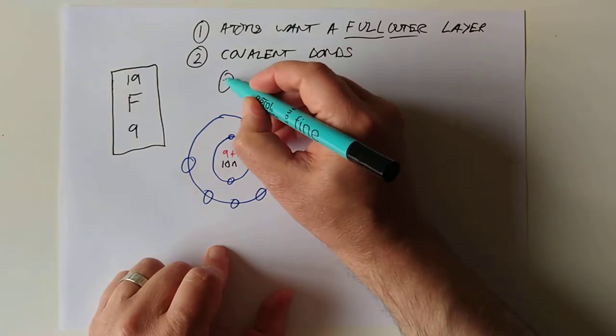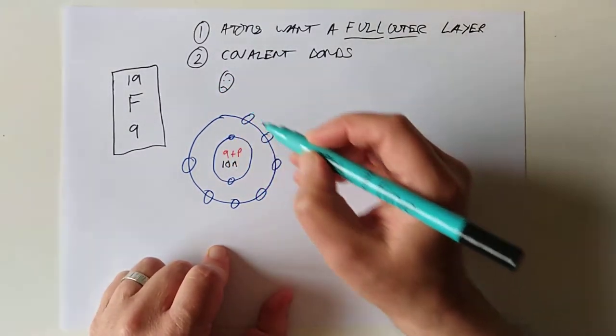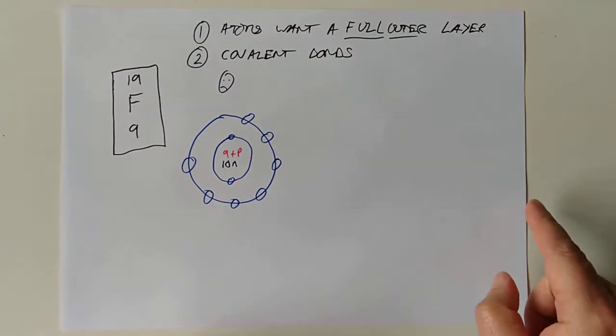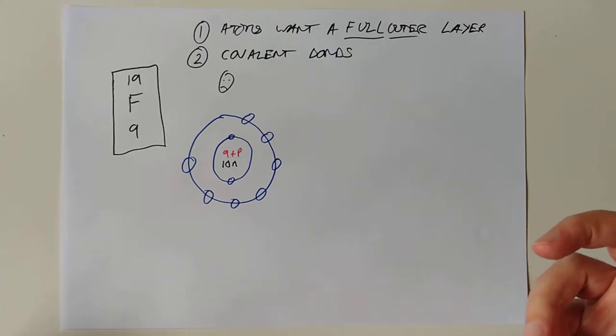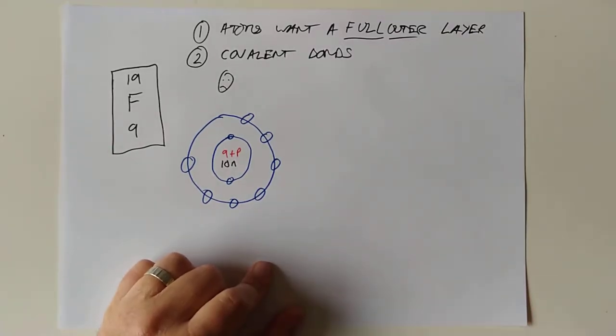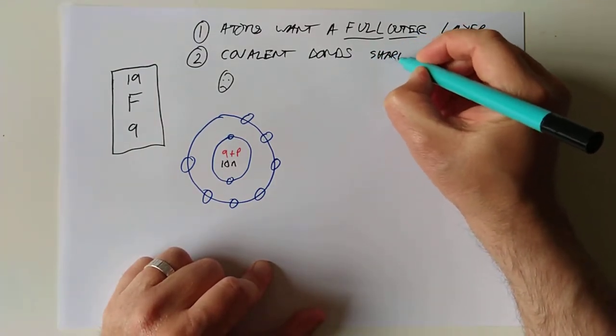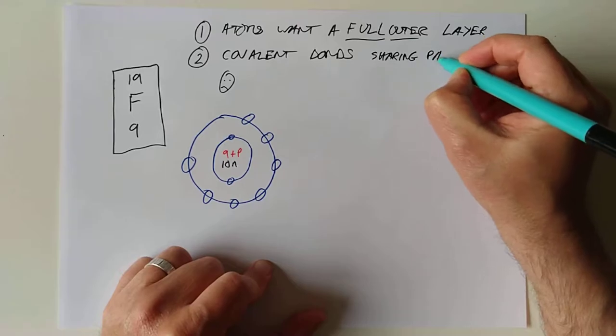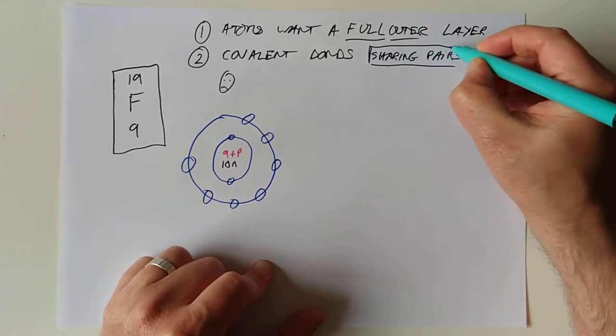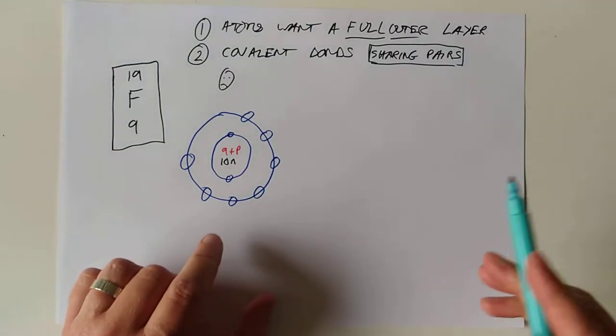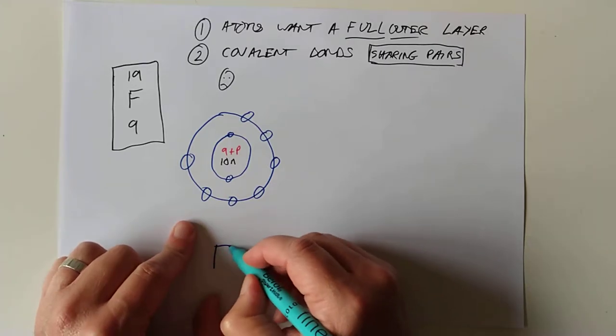So this is obviously not happy, is it? This is not a happy atom because it's not got a full outside layer. Now, last time we talked about losing electrons or gaining electrons to give to something else. Now, what we're going to do with covalent bonds is we're not losing or gaining. We are sharing. It's all about sharing pairs of electrons. How nice, isn't it? Let's all share electrons, ladies and gentlemen. That way we can all be happy.